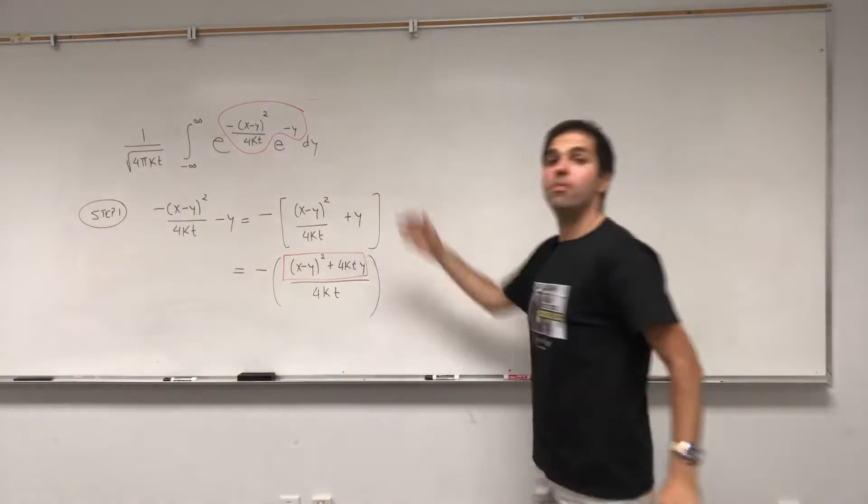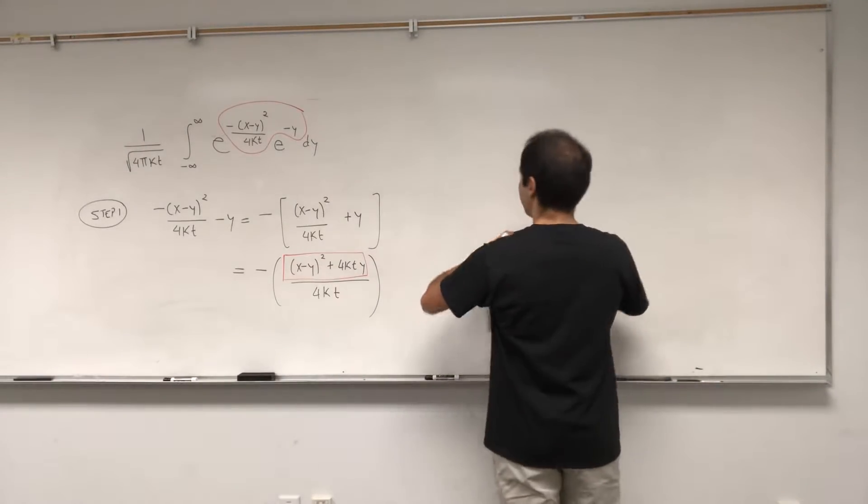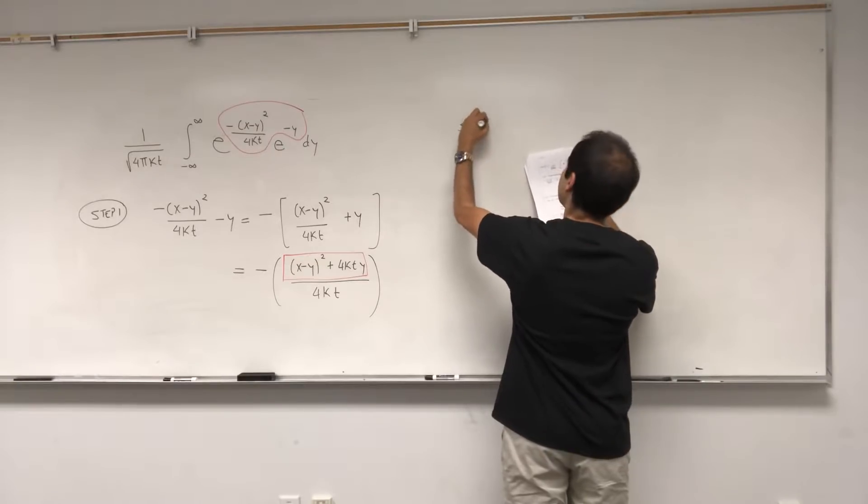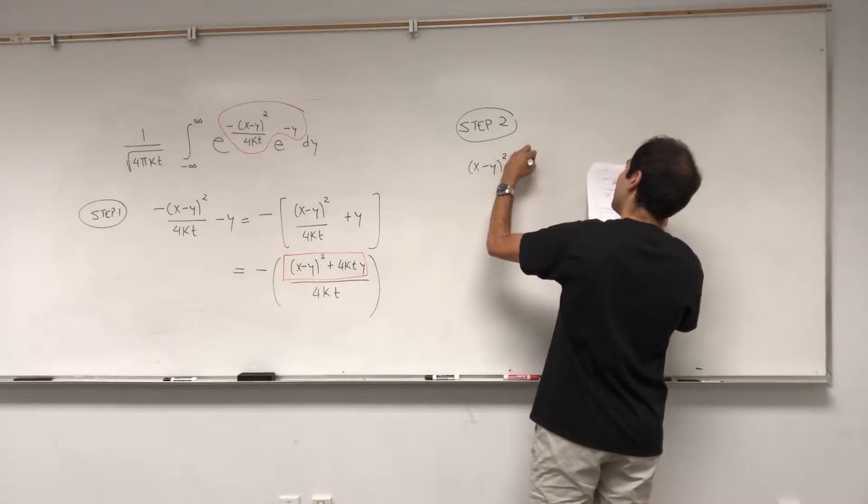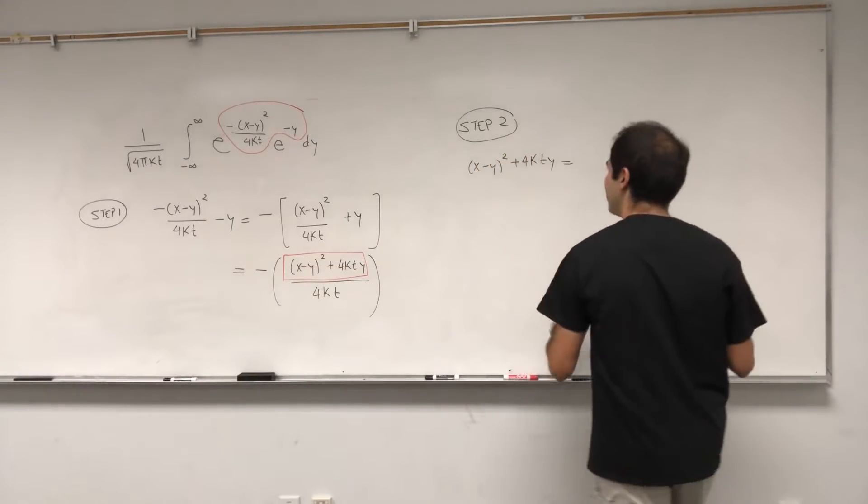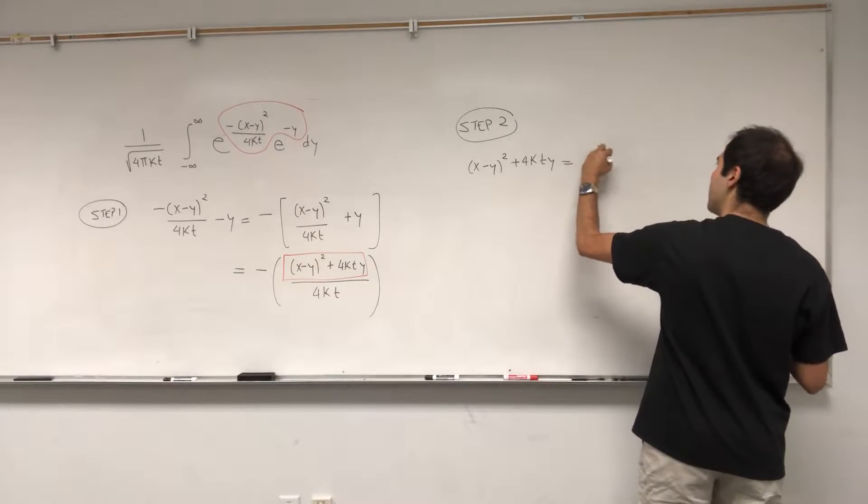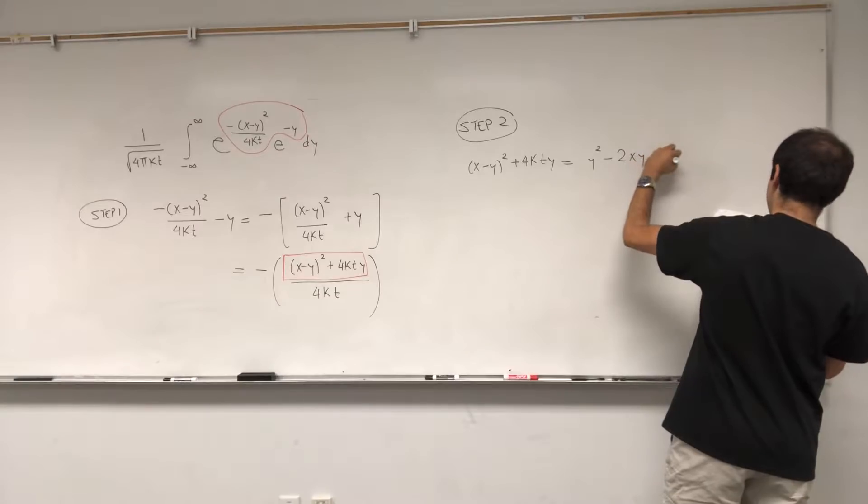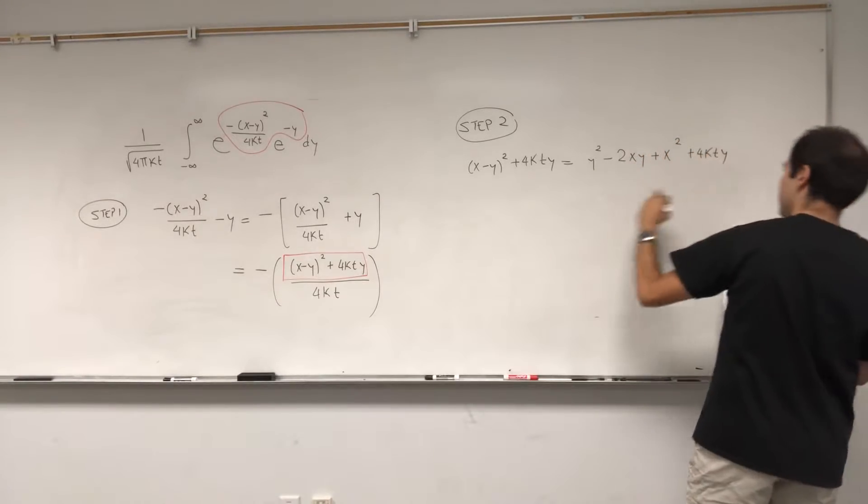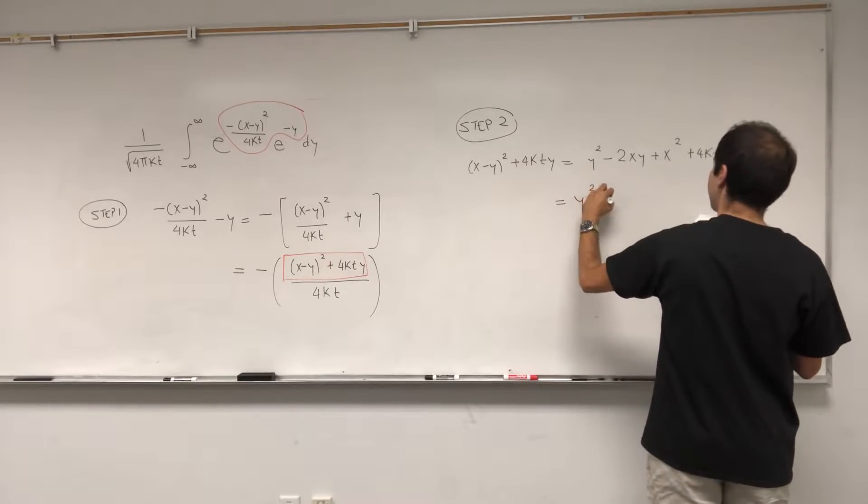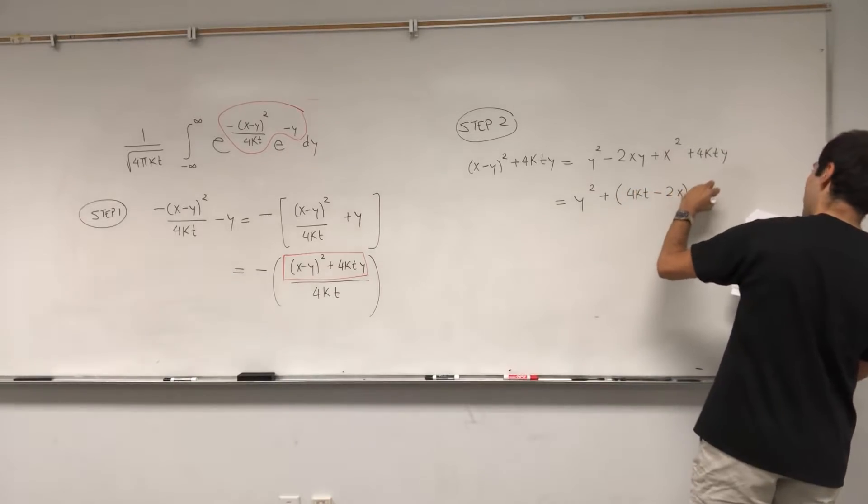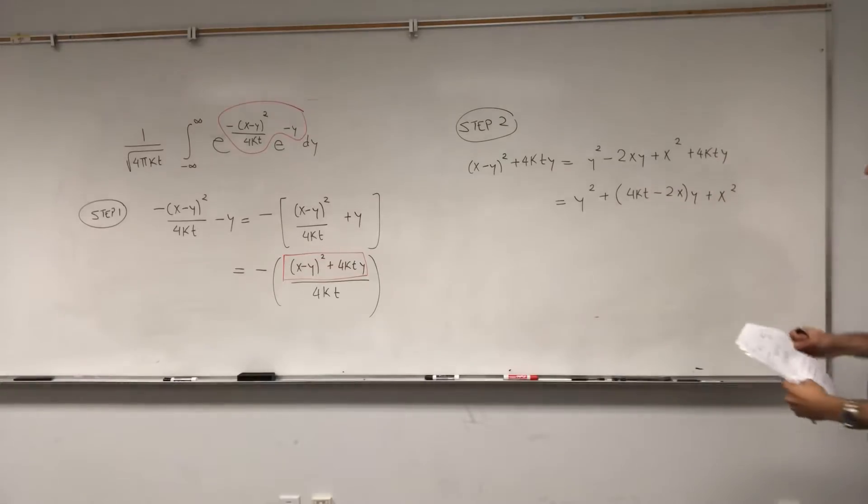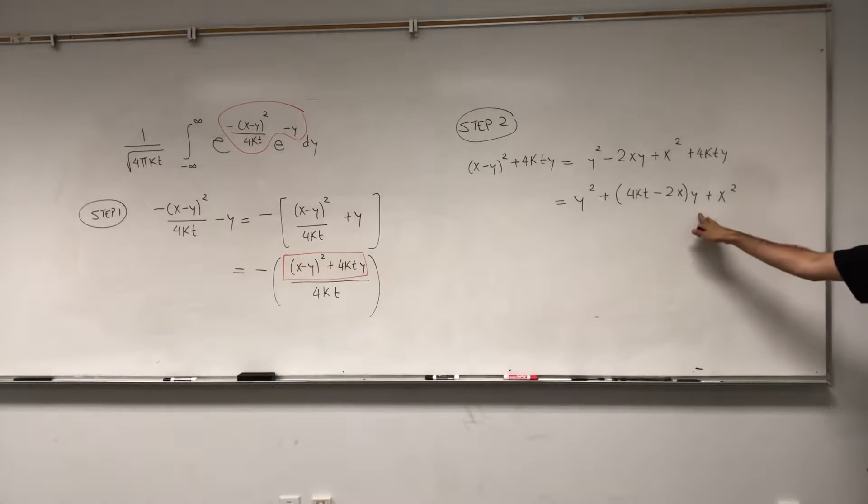As I said, what we would like to do is to complete the square with respect to y. So step two. Let's do x minus y squared plus 4kt y. That becomes, I think, y squared minus 2xy plus x squared plus 4kt y, and that becomes y squared plus 4kt minus 2xy plus x squared.